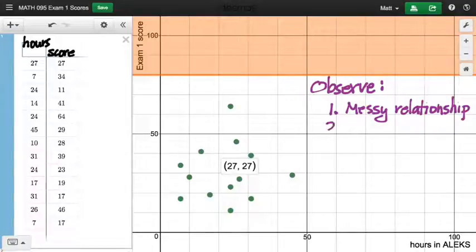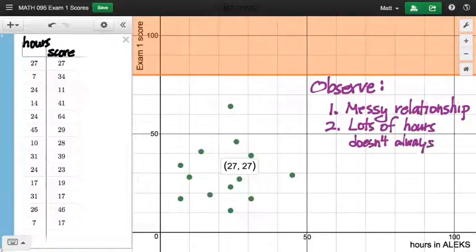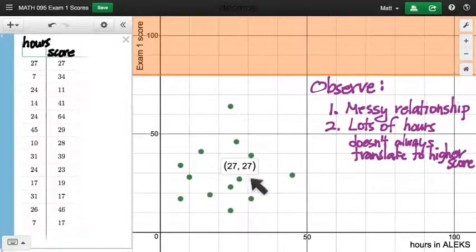The observation there is that lots of hours doesn't always translate to a higher score. For example, going back to this person who's at 27, 27, right? How about this data point right here that has more hours spent? It looks like about 31 or 32 hours. Yeah, so that's this data point right here, 31, 17.